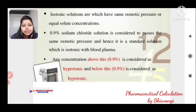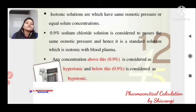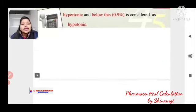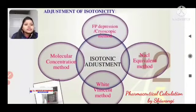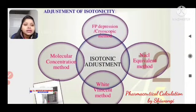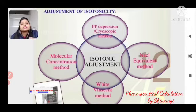Adjustment of isotonicity can be done by four methods: Molecular Concentration Method, White Vincent Method, NaCl Equivalent Method, and Freezing Point Depression (Cryoscopic) Method.